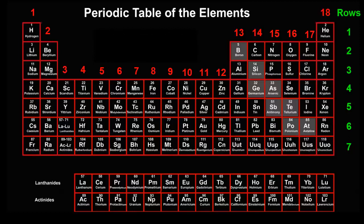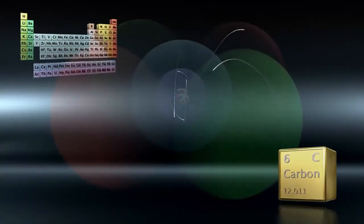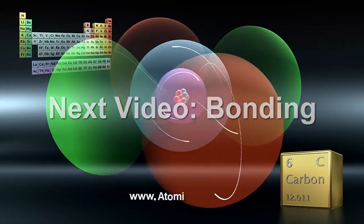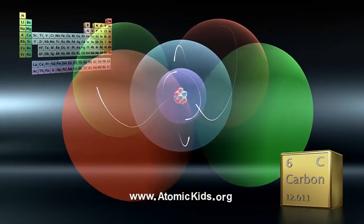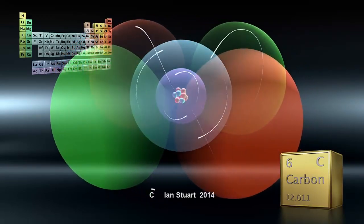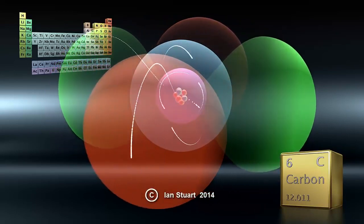My view is that the periodic table is the alphabet of the universe. Whereas our ordinary alphabet is a list of letters that can make all the words in our language, the periodic table is a list of elements that can make all the substances in the universe.